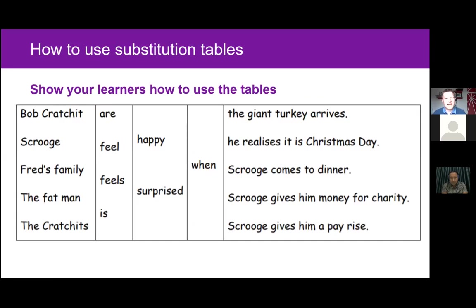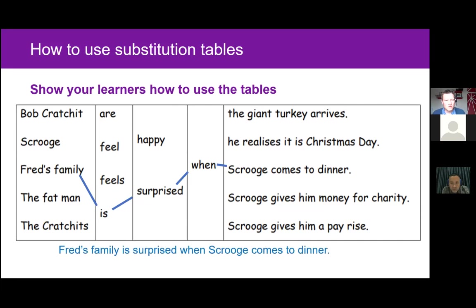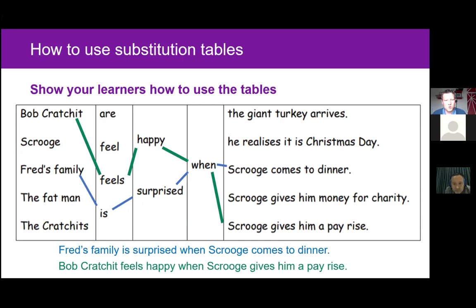The next thing to consider is how to help your learners use the tables themselves. If they've never seen them before, they will need some support in how to use them. The easiest thing is simply to provide a visual example — draw lines on the board or on the handout to show how they pick one element from each column to make a sentence. It's always a good idea to do an example together with everyone before letting learners try it on their own.